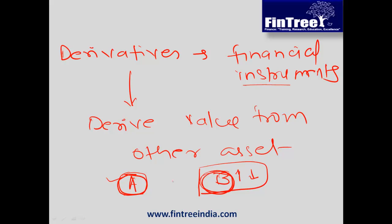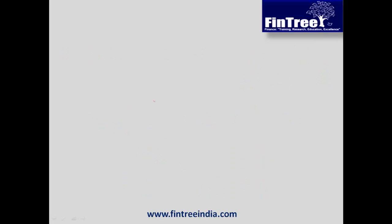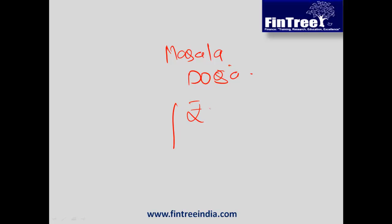Let us do a small example to get hold of this concept properly. Let us take any dish that we like — let us say that all of us like masala dosas. Let us say that the price at which these dosas are available in the market at a good quality restaurant is rupees 70 per dosa.